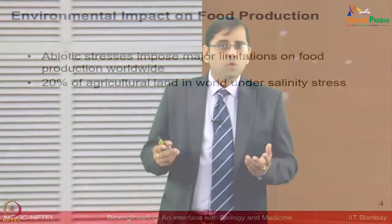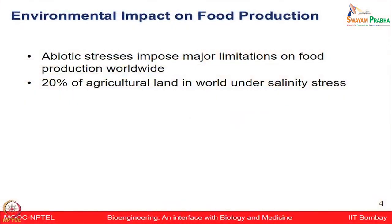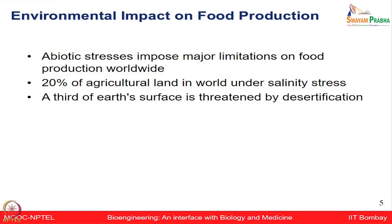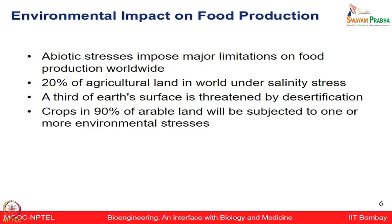Let us think about the environmental impact on food production. Different types of stress conditions such as salinity, drought, and cold affect plant productivity worldwide. Almost 20 percent of the world's agricultural land is under salinity stress. A third of the earth's surface is threatened by desertification, and crops in 90 percent of arable land are expected to encounter one or another type of environmental stress condition.